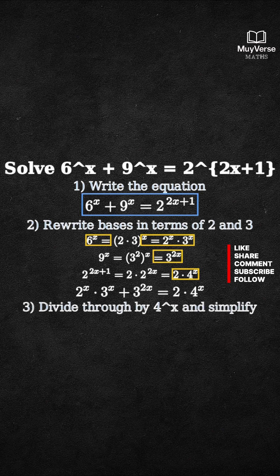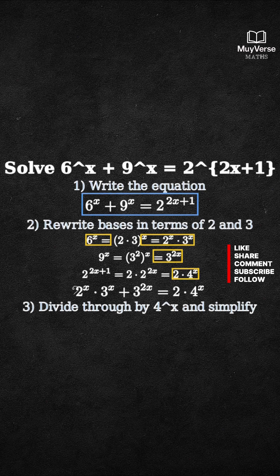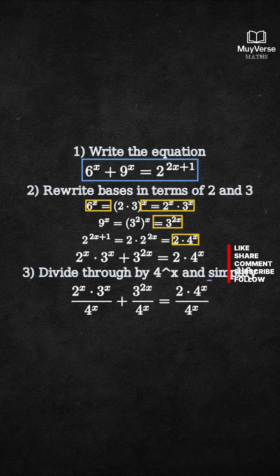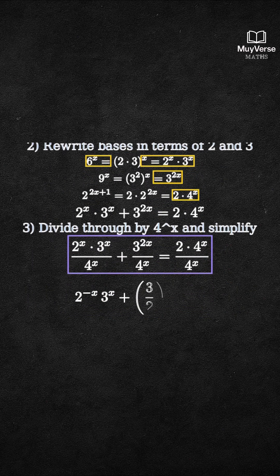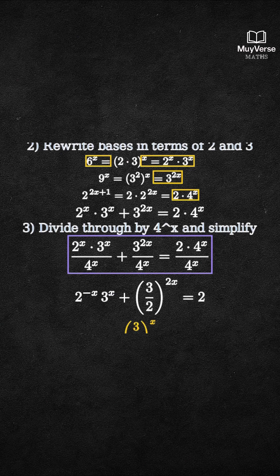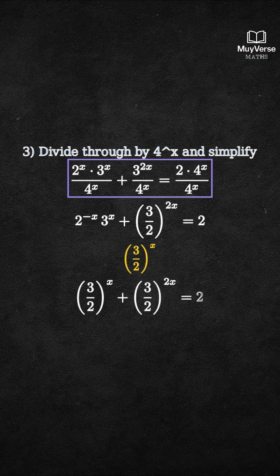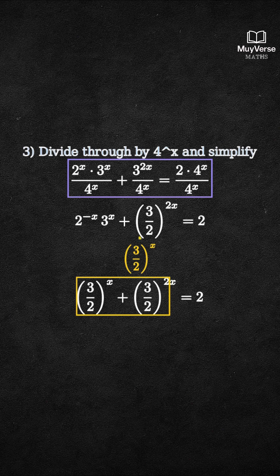Step 3. Divide every term by 4 to the x. We write a single fraction for each term. Now simplify powers carefully. 2 to the minus x times 3 to the x becomes 3 over 2 to the x. 3 to the 2x over 2 to the 2x becomes the quantity 3 over 2 to the power 2x. All together we get 3 over 2 to the x plus 3 over 2 to the power 2x equals 2.